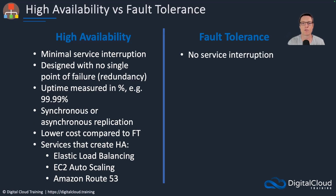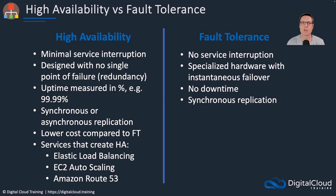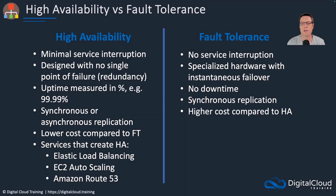On the other hand, we've got fault tolerance. Here, you're looking for no service interruption whatsoever. Therefore, you need specialized hardware that provides instantaneous failover — there should be no downtime at all with fault tolerance, even if one or more components fail in a system. Synchronous replication is the only fault tolerant replication mechanism, because with asynchronous it could potentially lose data, and with fault tolerance you want to ensure zero data loss. There's definitely a higher cost here compared to high availability.